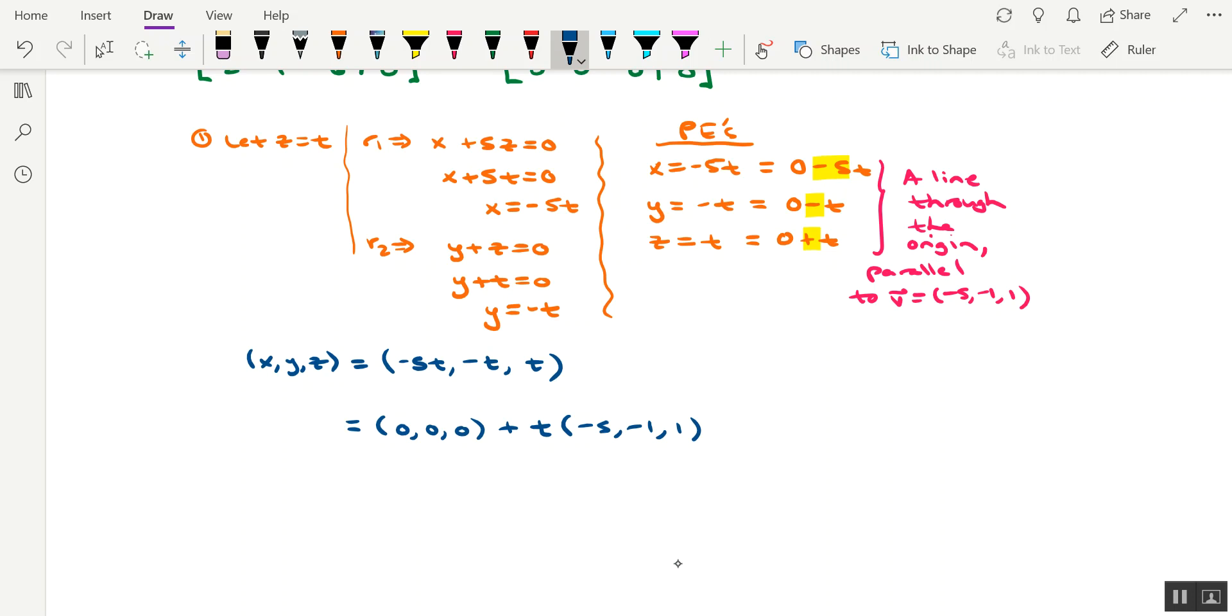Okay, and this would be the vector equation for the line, and you can see that the line goes through the origin and would be parallel to this vector v having components negative 5, negative 1, 1. All right, so if you did it this way instead, you should still arrive at the same conclusion that it's a line through the origin. And I'll add a little more detail here: parallel to v equals negative 5, negative 1, 1.